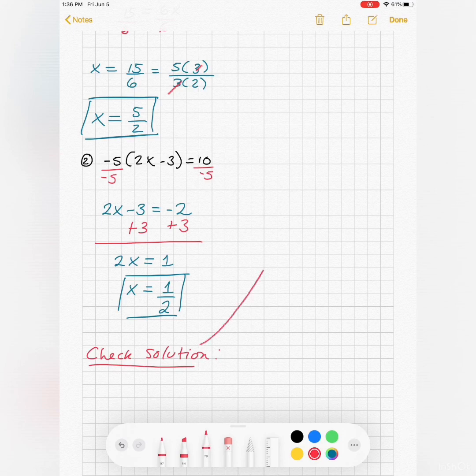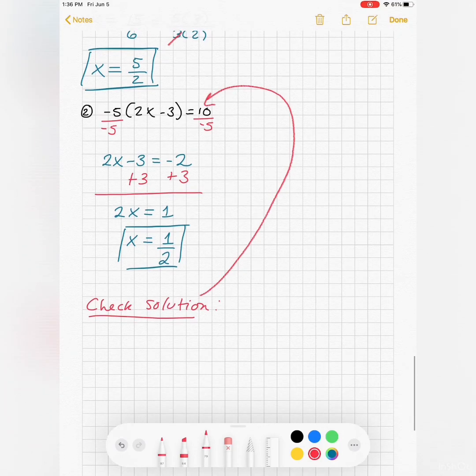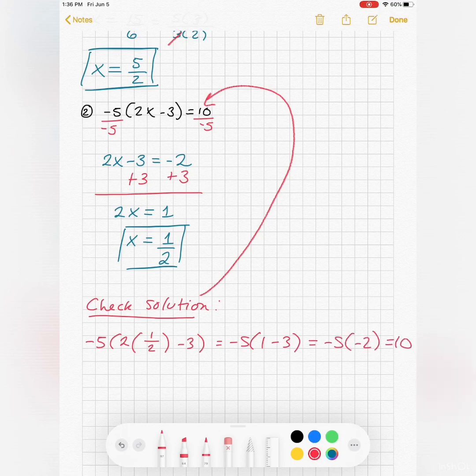So we have negative five times two times a half minus three. See what that gives us. Negative five, two times a half is one. Oh look at that, that is equal to ten, so my solution does check.